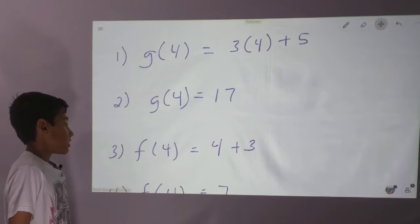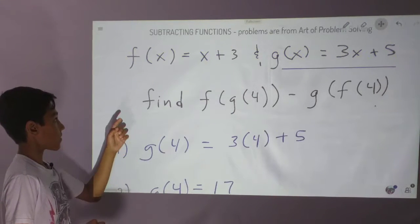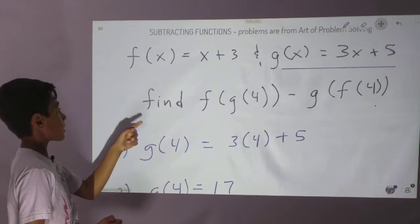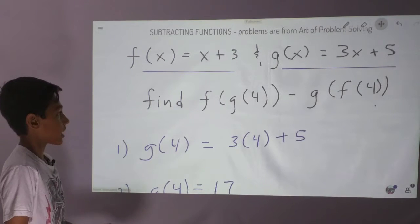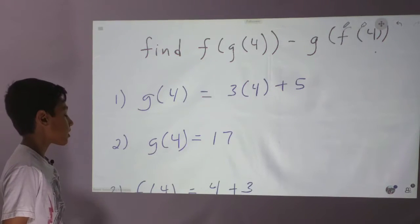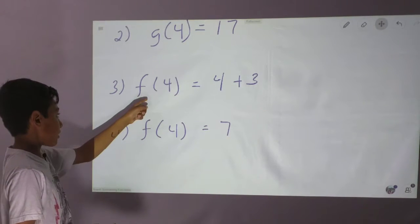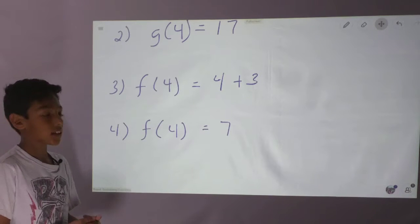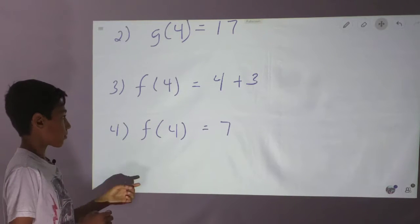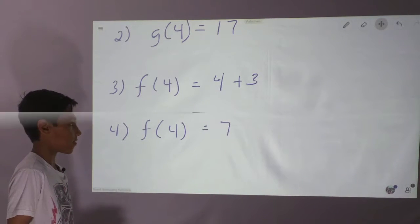So now we go on to f of 4. The function for f of x is x plus 3. So we're going to plug in 4 for x again. So we get f of 4 equals 4 plus 3, and 4 plus 3 is 7. So f of 4 equals 7.